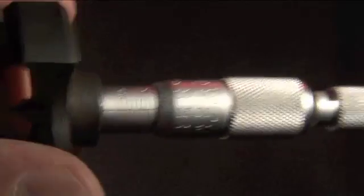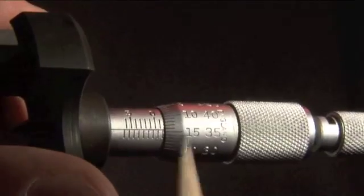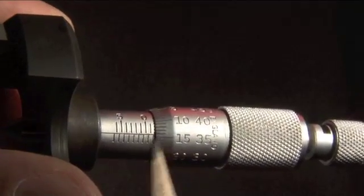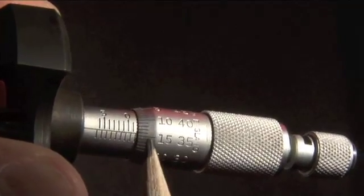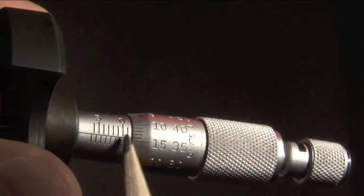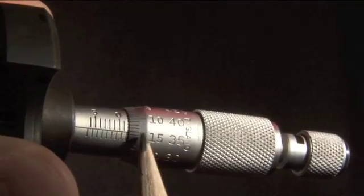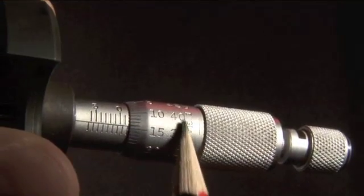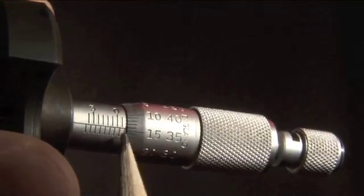Now find the fine scale mark that lines up most closely with the horizontal axis. The one that lines up most closely with the horizontal axis is this one here, just past the main one, this one here. Because we're on the positive side of the curvature, we're looking at this ring here. And so that's 36.